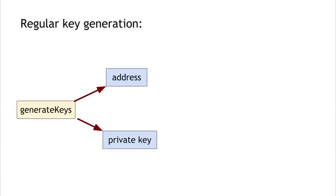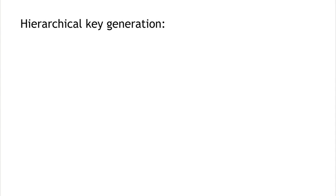A better solution is to use a hierarchical wallet, which requires a little bit of cryptographic trickery. To review: when we talked about digital signatures back in lecture one, we talked about a 'generate keys' operation which generates a public key and a secret key. The public key in a Bitcoin context corresponds to the Bitcoin address that can receive coins, and the private key allows us to spend or control coins sent to the corresponding address.